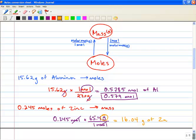And if we do sig figs, we have three, and so we're going to have 16.0 grams of zinc.